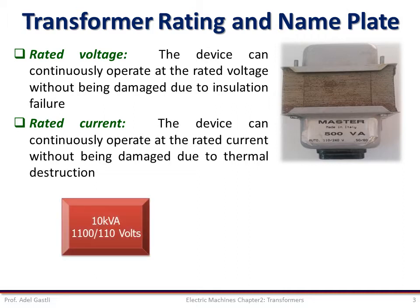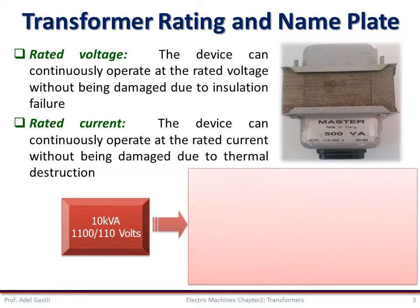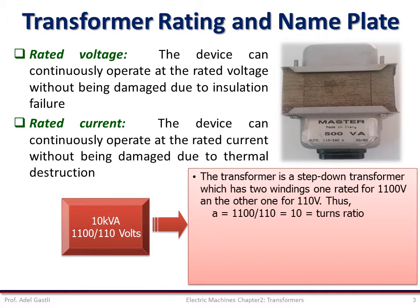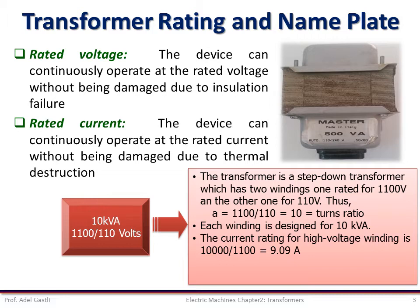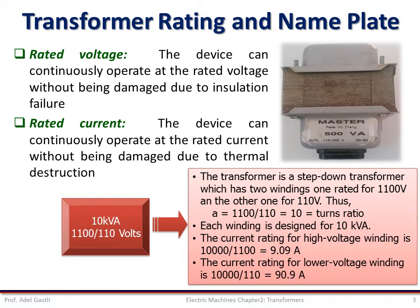For instance, if a transformer has the following information written on its nameplate, then we can deduce that the transformer is a step-down transformer which has two windings, one rated for 1100V and the other for 110V. Thus, the turn ratio A is equal to 1100 divided by 110, which is 10. This means also that each winding is designed for a maximum power of 10 kVA. We can deduce the current rating for the high voltage winding as 10,000 over 1100, which is 9.09 amps, and the current rating for the lower voltage winding is 10,000 divided by 110, which is 90.9 amps.